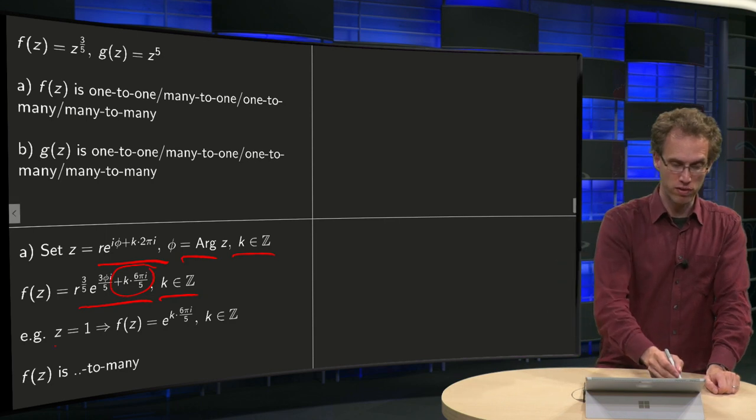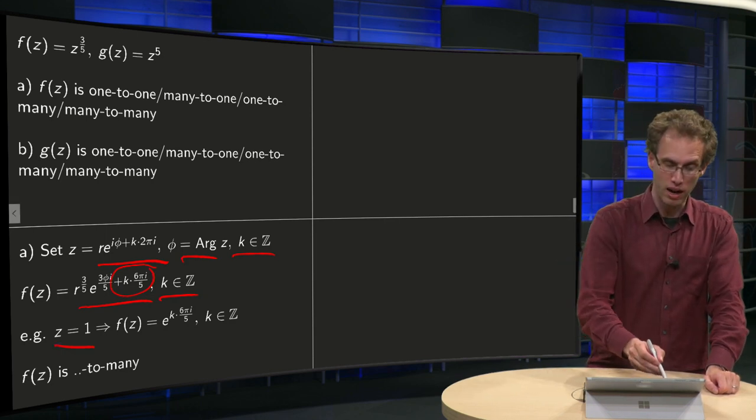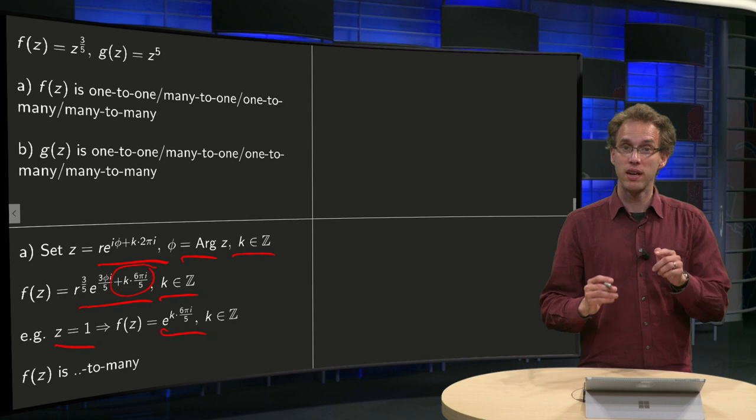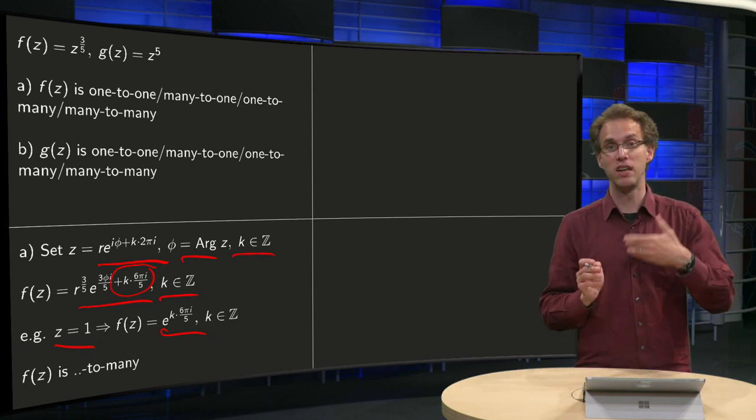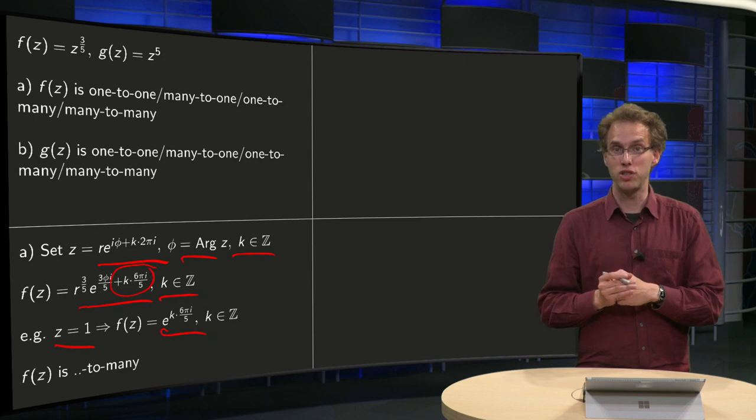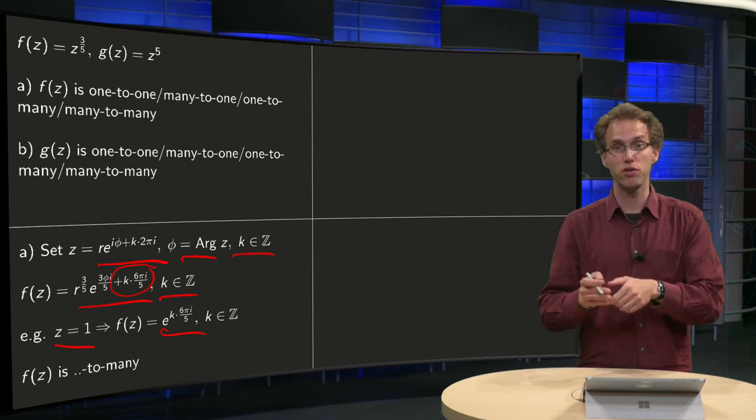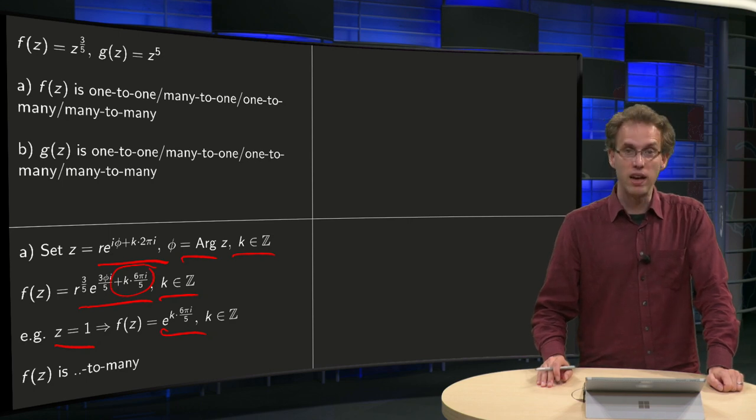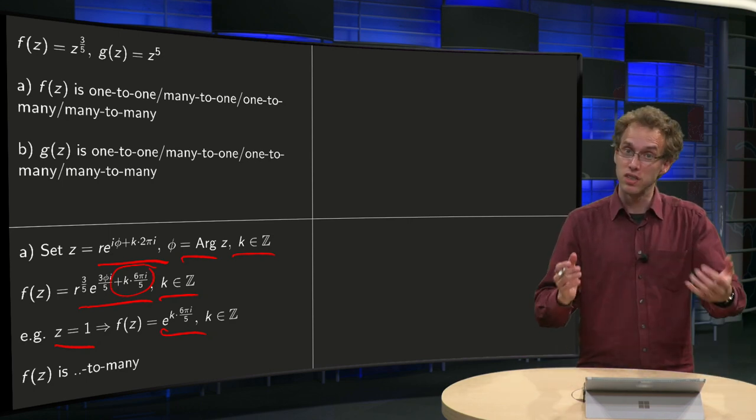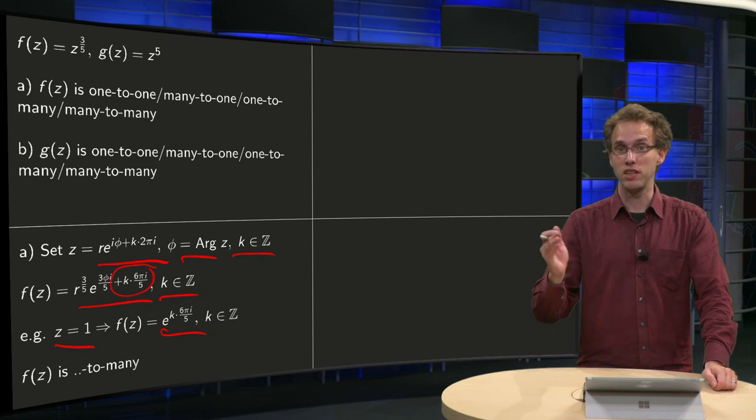For example, if you start with z equals one, then your f of z will be e to the power k times 6pi over 5, k is in Z. If you pick k equals zero you get the function value equals one. If you pick k equals one, you get e to the power 6pi over 5, which is a different value. So f of z is to many.